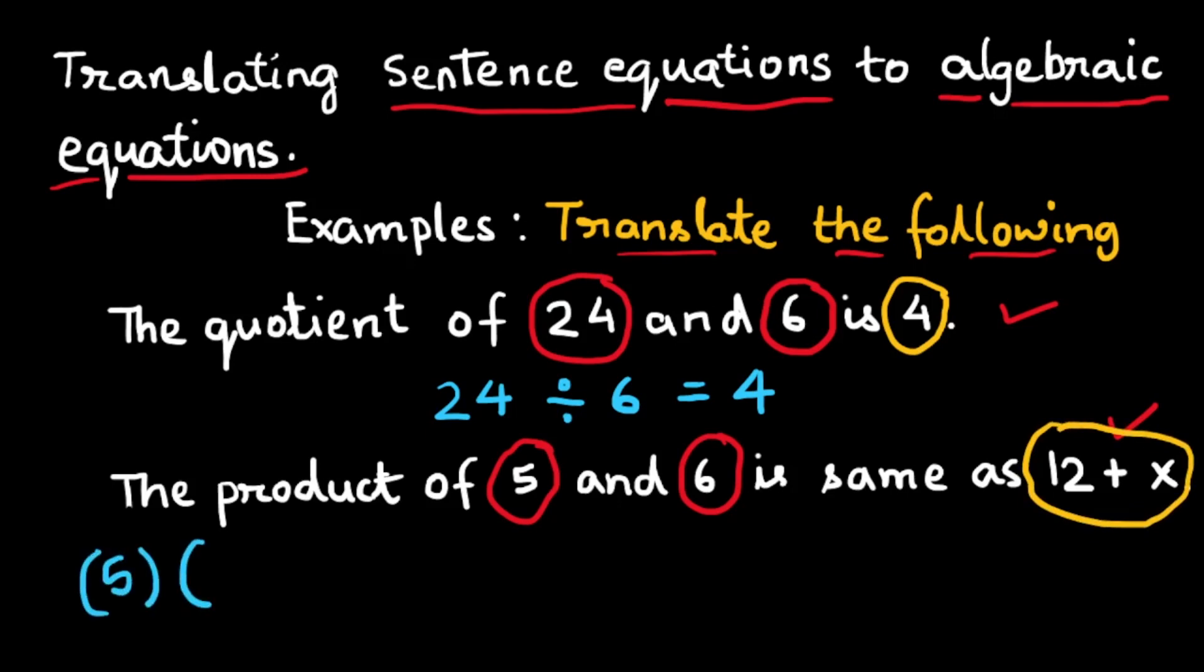So you can write it as 5 multiplied by 6 is equal to 12 plus x. If you don't want to write 5 multiplied by 6 then you can replace it with number 30 which is the product of 5 and 6.